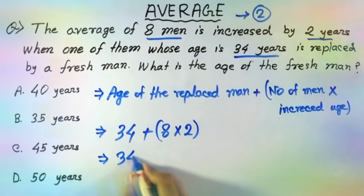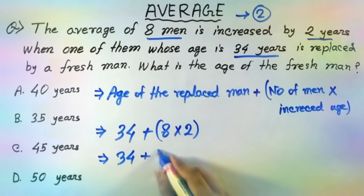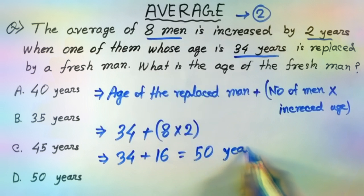34 plus 16 equals 50 years. The answer is 50 years.